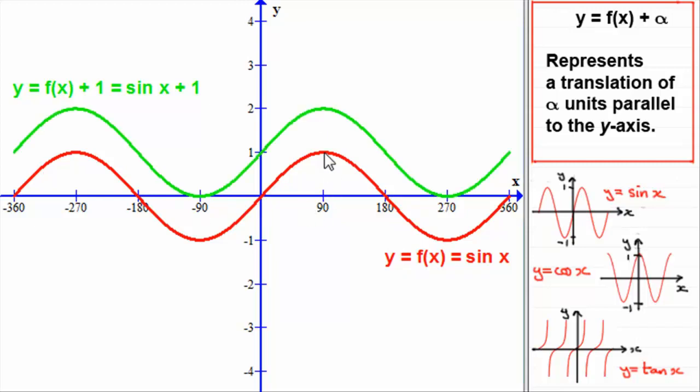You can see that this point here was originally at one unit up. Now, it's gone up to two. I've added one to that one there. Where it crossed the x-axis at 180 degrees, the y value is zero. I've added one to that, and this point directly above it is at one. And that applies to all the points along there.